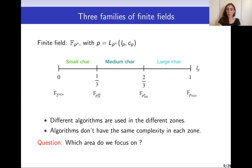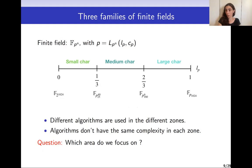The L notation also allows us to define three families of finite fields where the characteristic P is expressed using this L notation. Depending on the relation between P and n, we have finite fields said to be of small characteristic, medium characteristic, and large characteristic. The algorithms that solve DLP on finite fields differ depending on which area we're in, and their complexities vary accordingly.